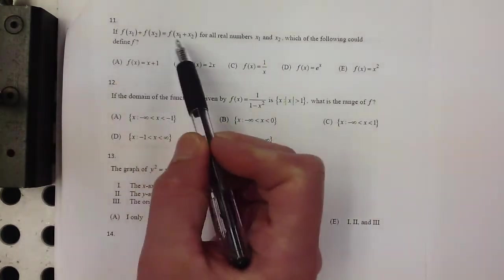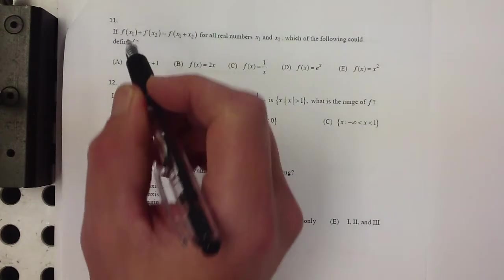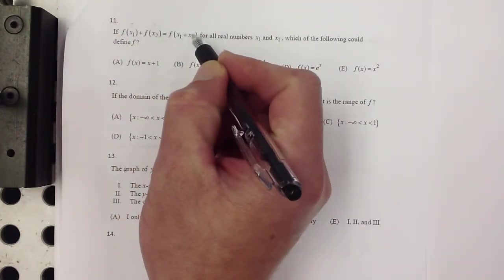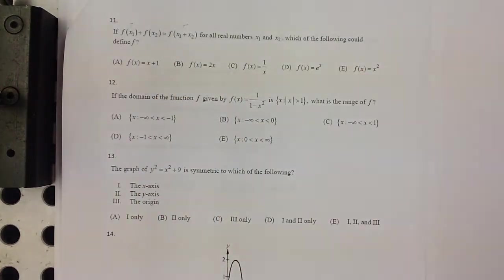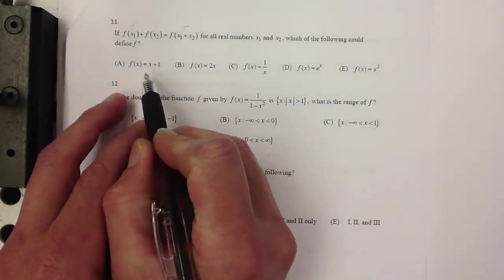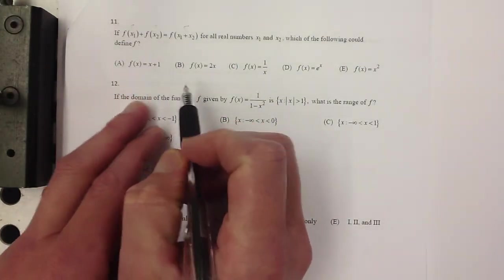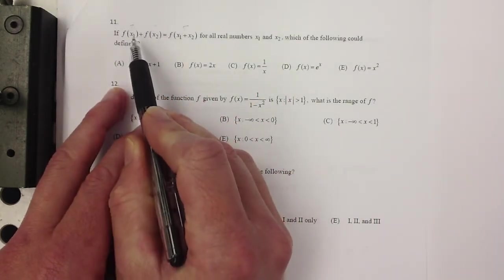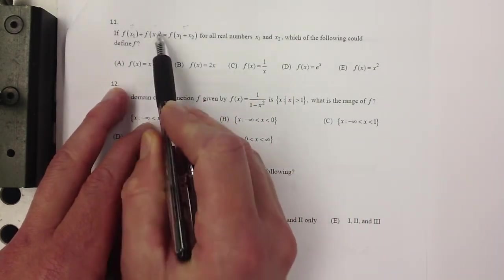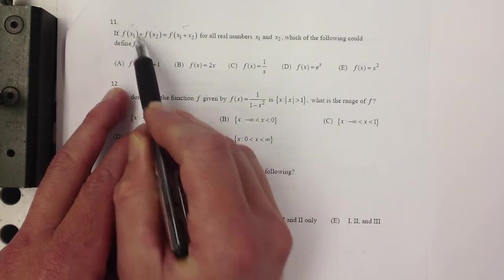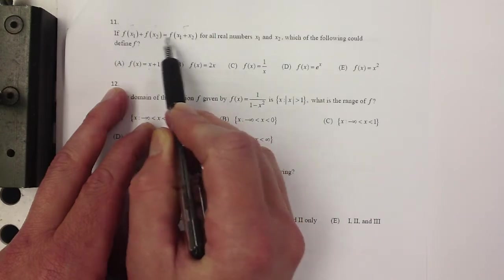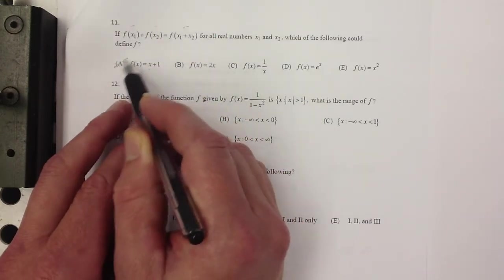You could try some numbers. Make x1 equal 2 and x2 equal 3, and then x1 + x2 would be 5, right? And you could see if it works for those numbers. I'll just do a quick check here, and we'll see if we can't figure out what the right answer is, and then I'll show you how to do it more generally. So if x1 is 2 and x2 is 3, then f of this would be 3, this would be 4, 3 plus 4 is 7, and this would be 6. So that does not work.